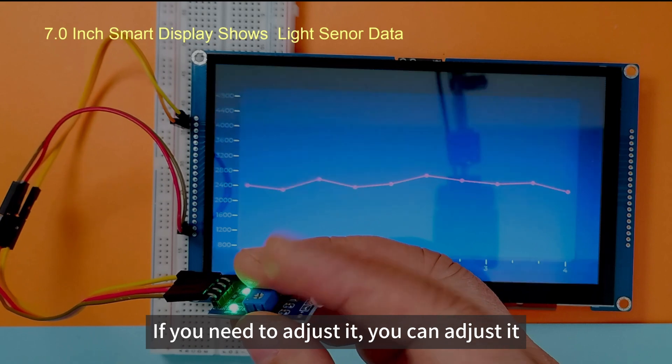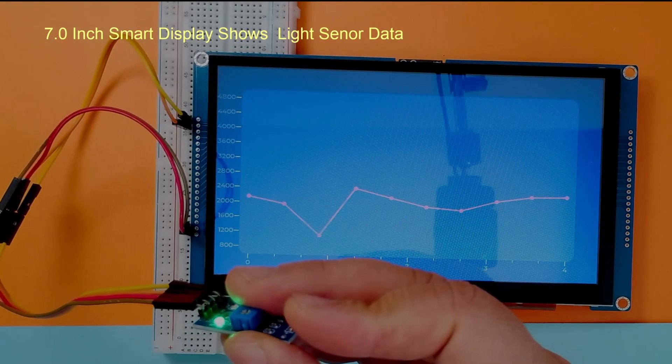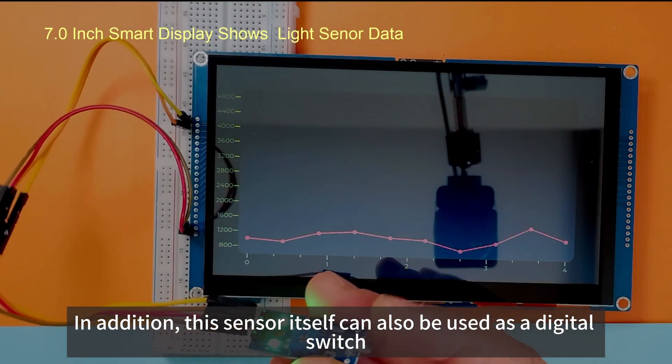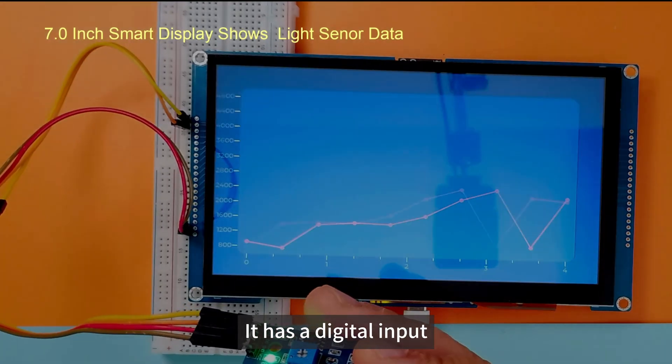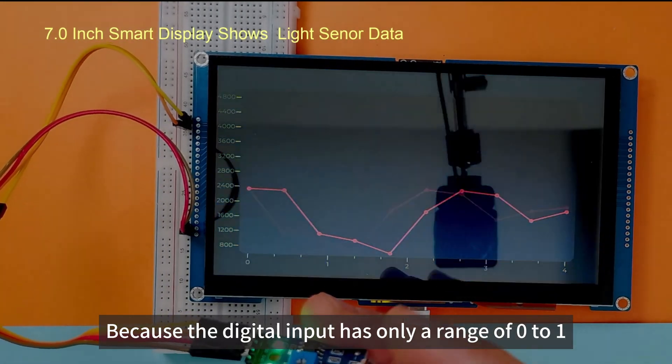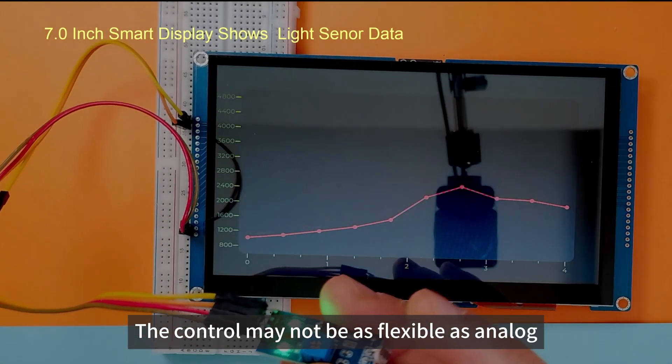If you need to adjust it, you can adjust it. In addition, this sensor itself can also be used as a digital switch. It has a digital input. Because the digital input has only a range of 0 to 1, the control may not be as flexible as analog.